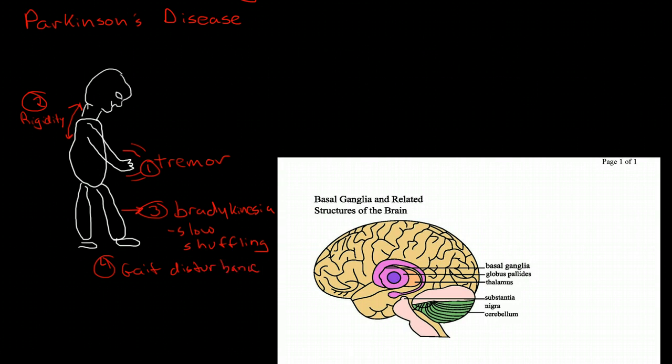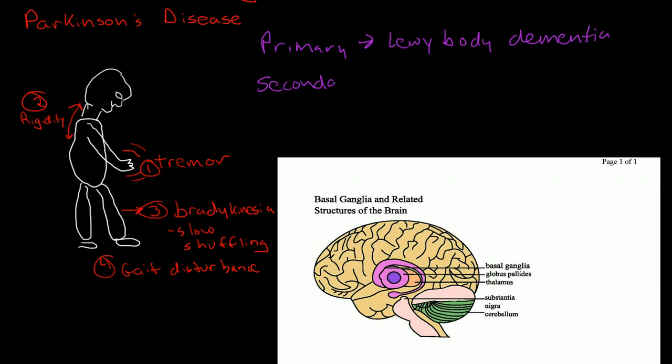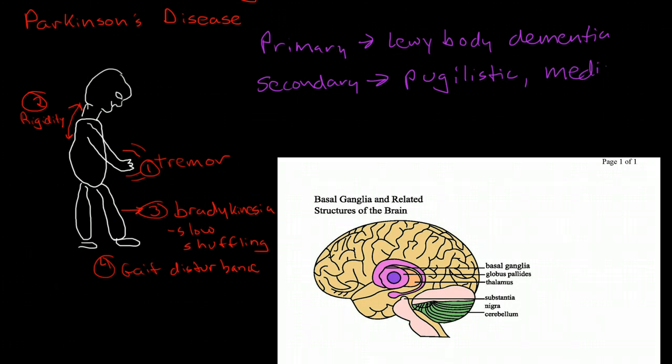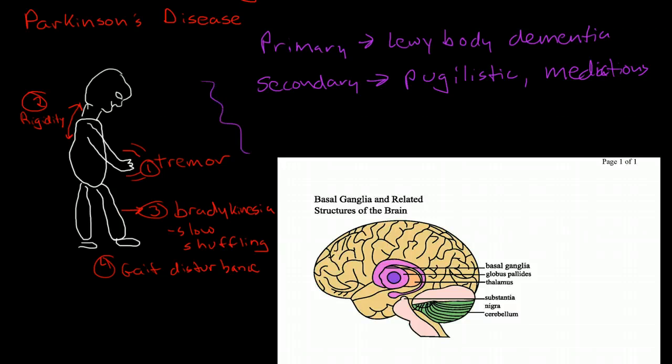There are several different types of Parkinson's disease. There is primary, which is usually caused by Lewy body dementia, and then there is secondary, which could have a whole lot of causes. Causes that we think of commonly are pugilistic, so patients that have been hit in the head a number of times like Muhammad Ali, medications can cause Parkinson's-like syndrome, and brain lesions, particularly brain lesions in the midbrain.